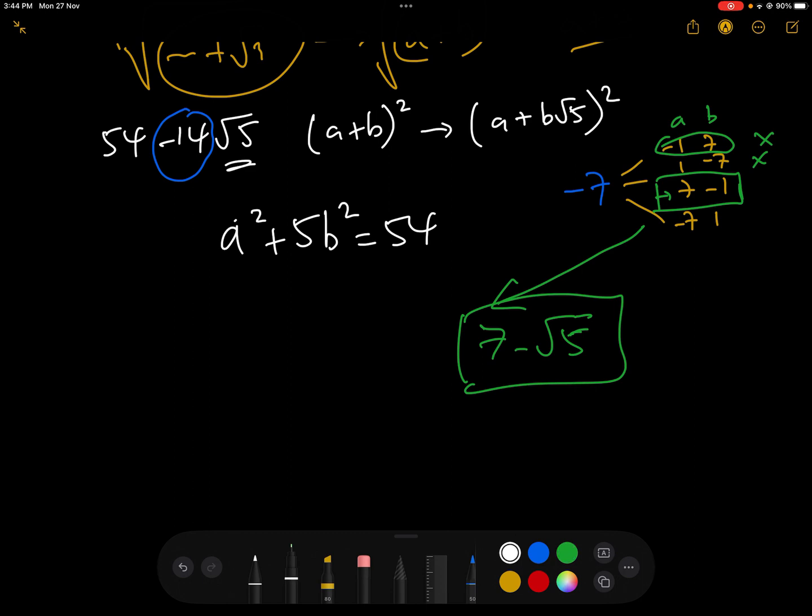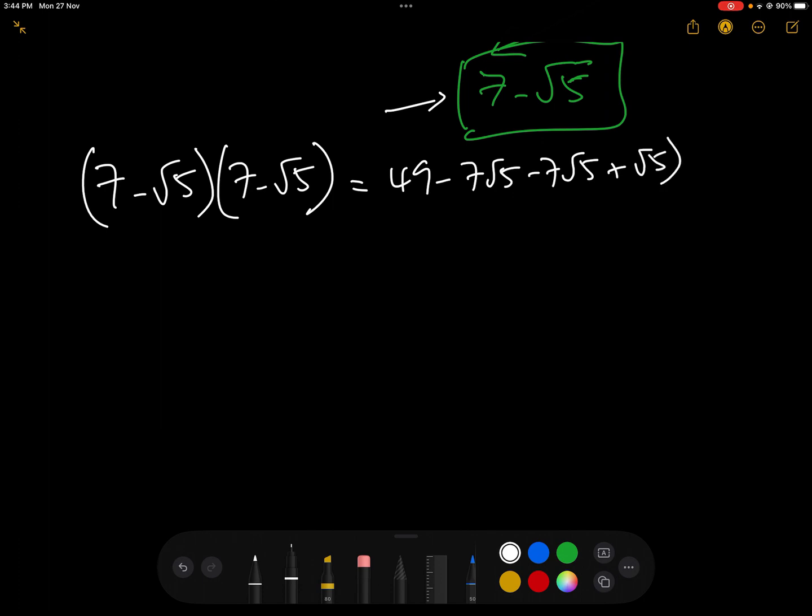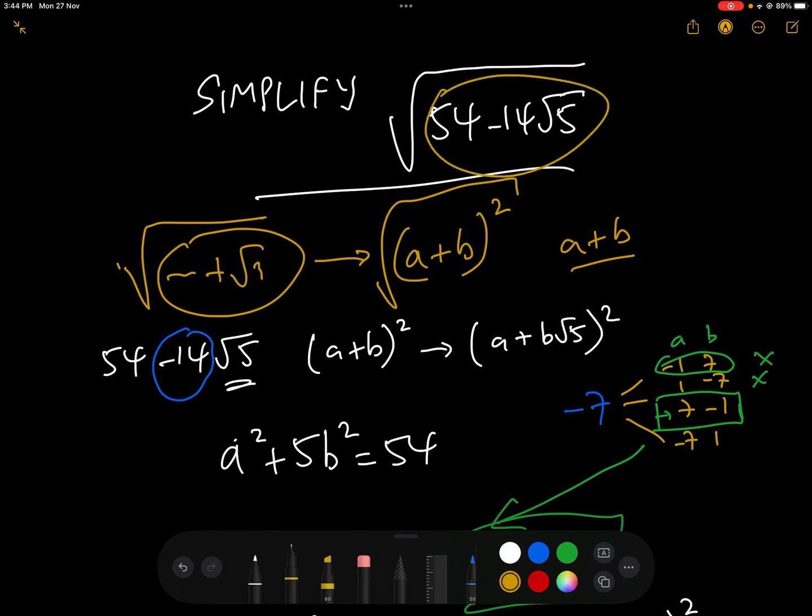So first of all, let's just check that 7 minus root 5, which is our answer, let's just check that 7 minus root 5 squared is 49 minus 7 root 5, just expanding out of the bracket, minus 7 root 5, add root 5 squared, which equals 54 minus 14 root 5, which is, if we go back to our question, here we have the 54 minus 14 root 5.